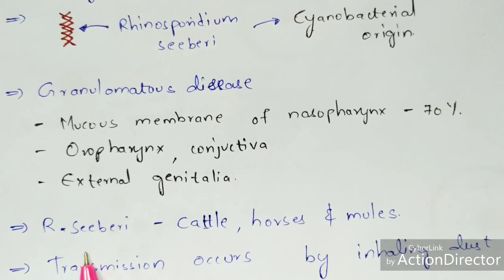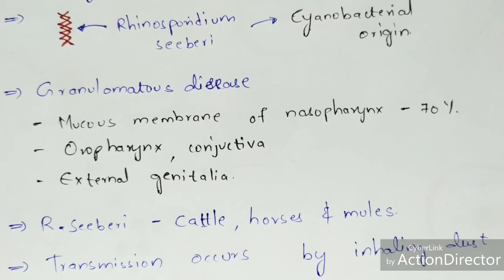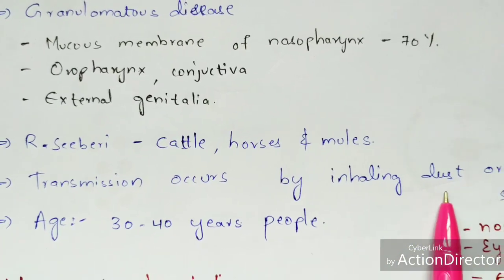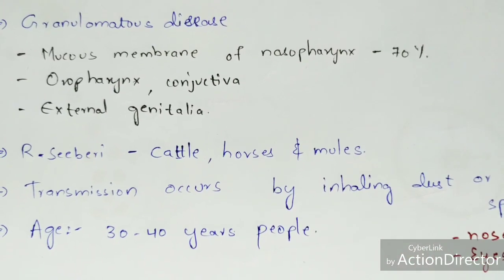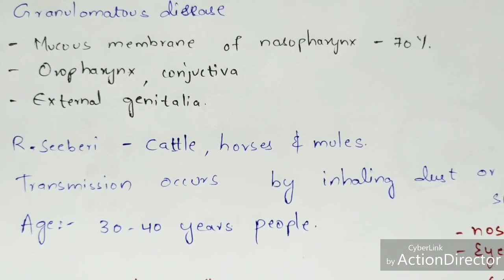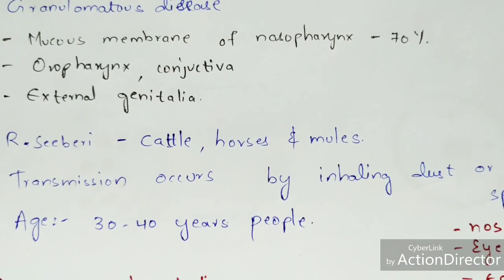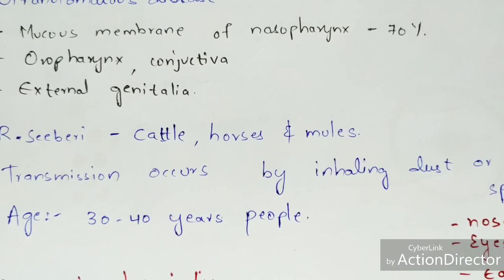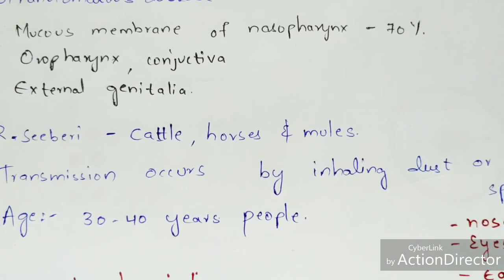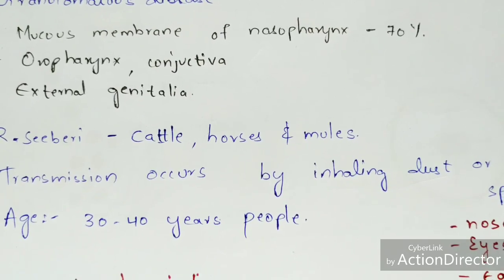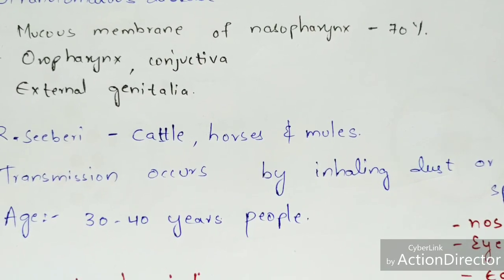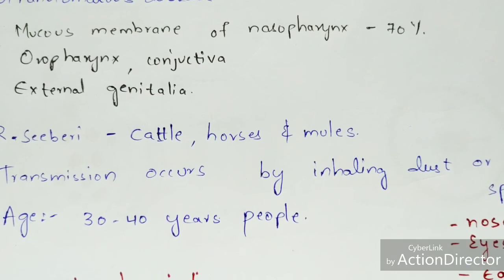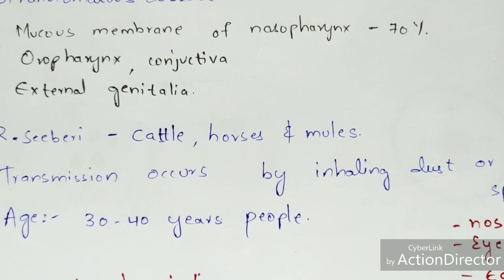Rhinosporidium seeberi can also be seen in cattle, horses, and mules. Transmission occurs by inhaling dust or consuming contaminated water. For example, if you are swimming or bathing in a polluted lake or pond that contains this causative agent, you may inhale or drink that water.